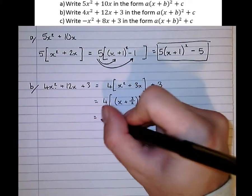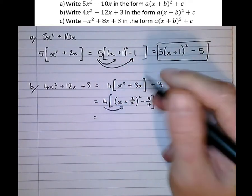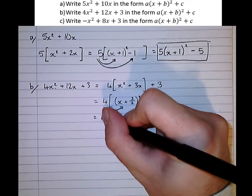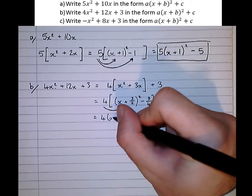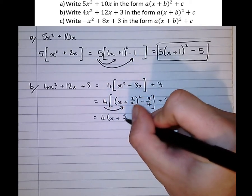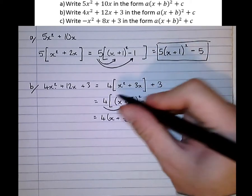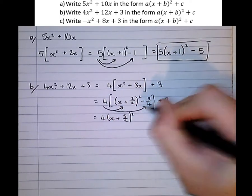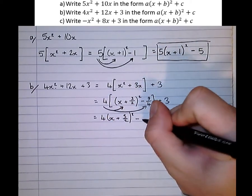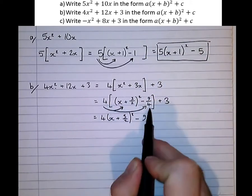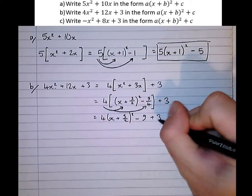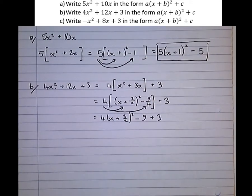Equals. And as we did before, multiplying the square bracket out. 4, x plus 3 over 2, squared. And 4 times minus 9 over 4 is minus 9. The 4's cancel. And obviously this is plus 3 bolted on the end.